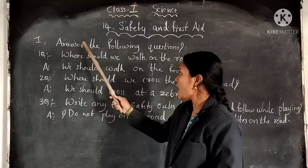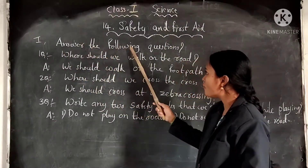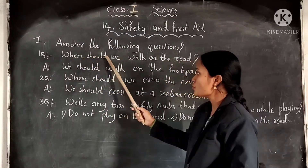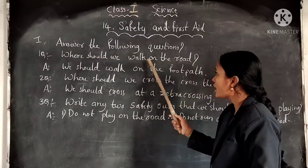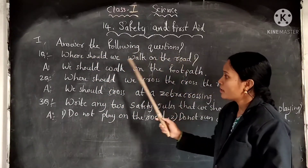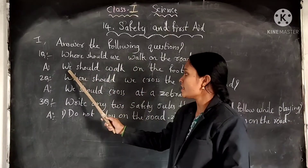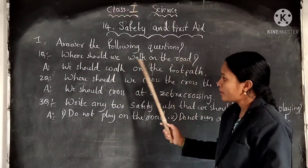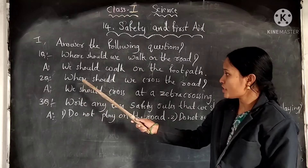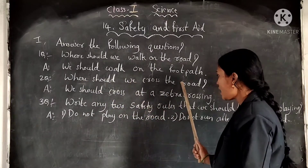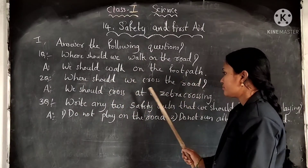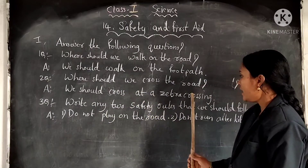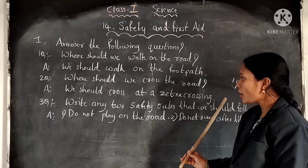First, answer the following questions. First question: where should we walk on the road? Answer: we should walk on the footpath. Second question: where should we cross the road? Answer: we should cross at the zebra crossing.